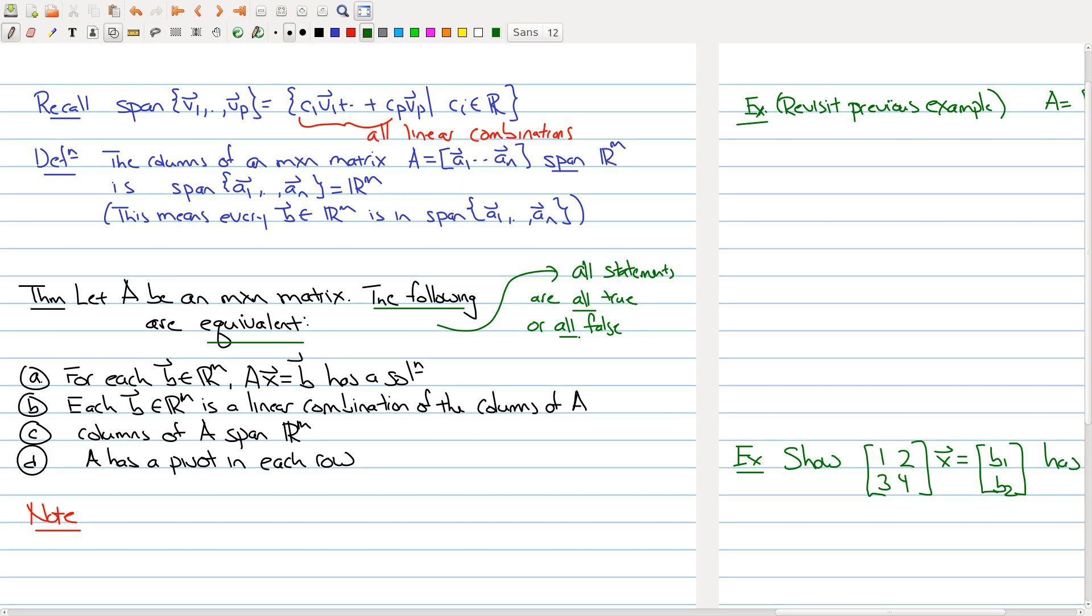So what it means is if you have a matrix that fails to have one of the properties, then it fails to have all the properties. On the other hand, if it has one of the properties, then it will have all of the properties.